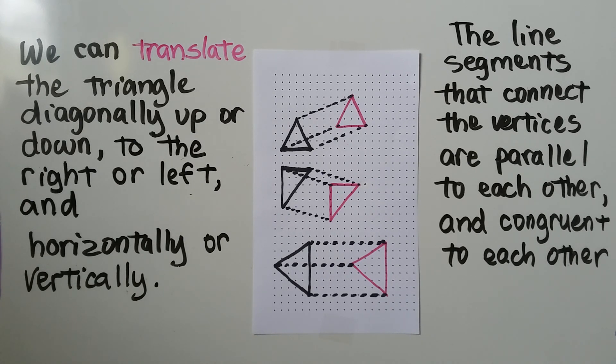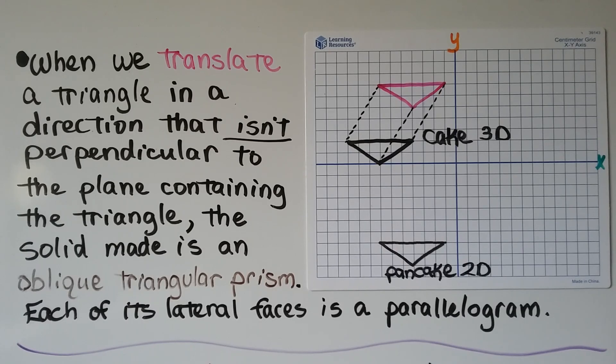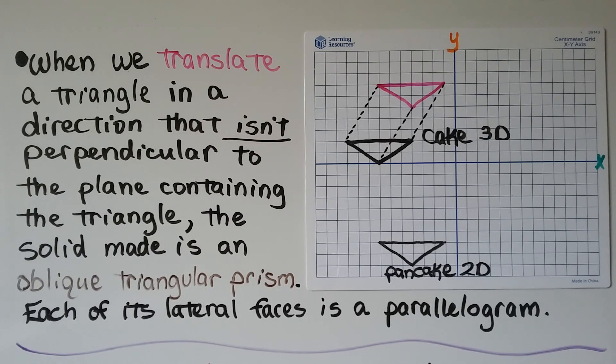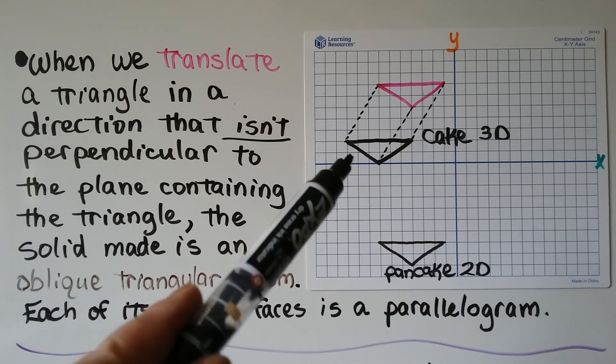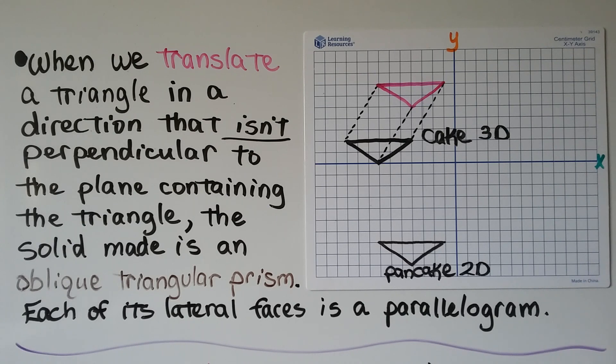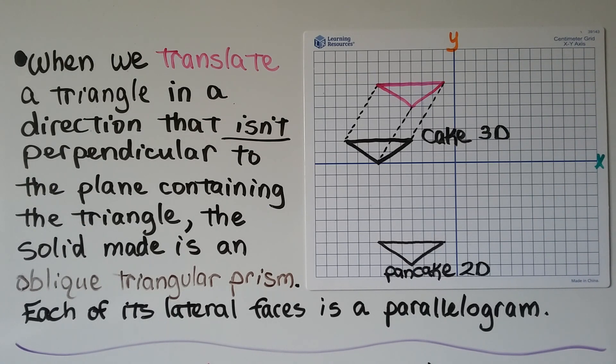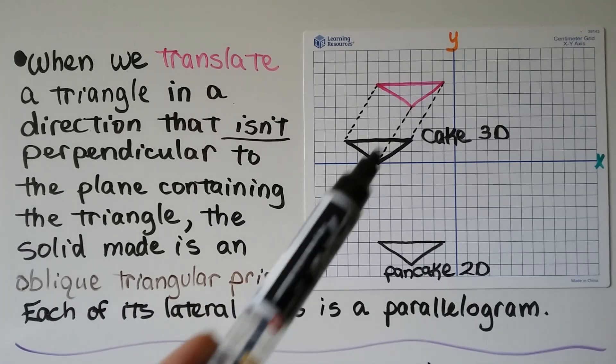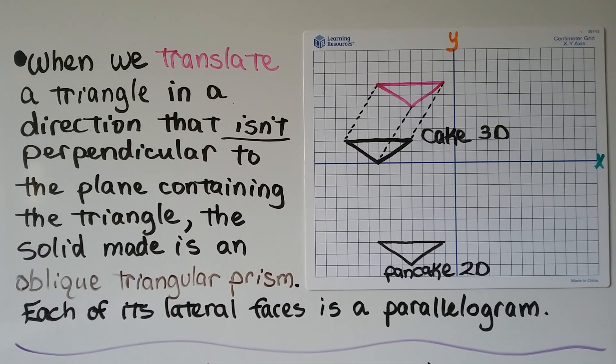The line segments that connect the vertices are parallel to each other and congruent to each other. When we translate a triangle in a direction that isn't perpendicular to the plane containing the triangle, so this is not perpendicular, this is skewed, the solid made is an oblique triangular prism, and each of its lateral faces is a parallelogram. We went from our 2D pancake triangle to a 3D cake oblique triangular prism.